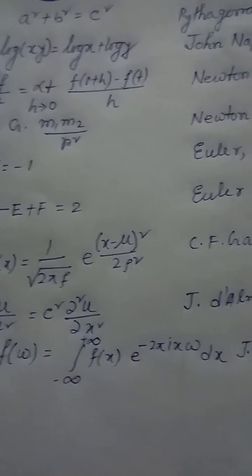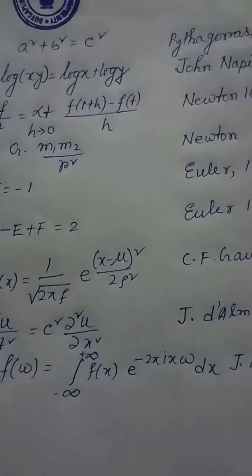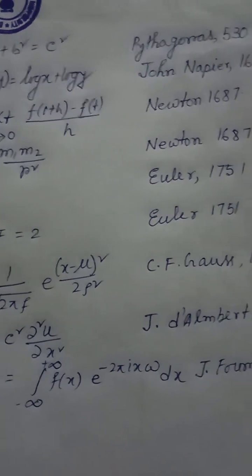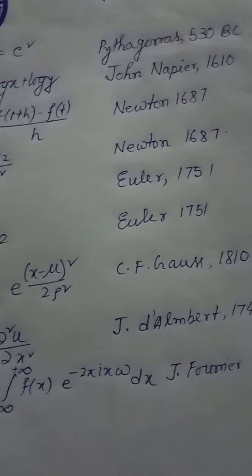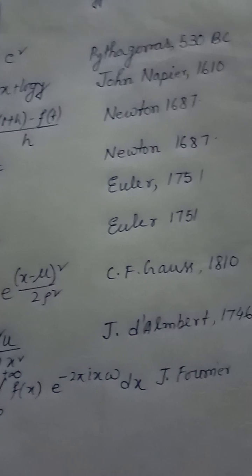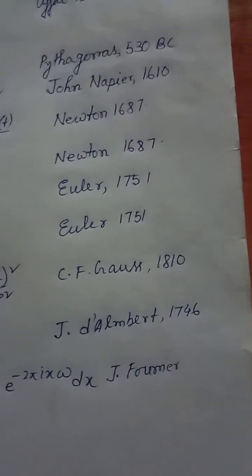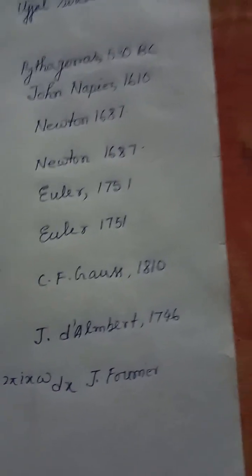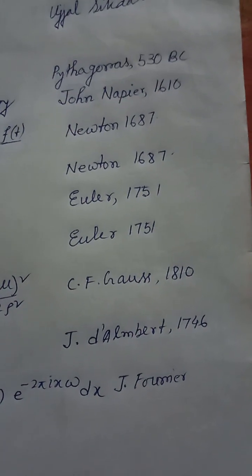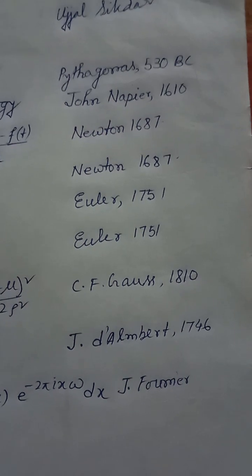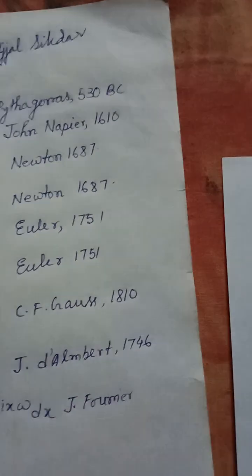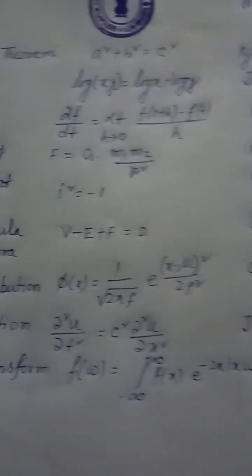Equation 8: Wave equation — ∂²u/∂t² = c² · ∂²u/∂x², Jean-Baptiste le Rond D'Alembert, 1746.